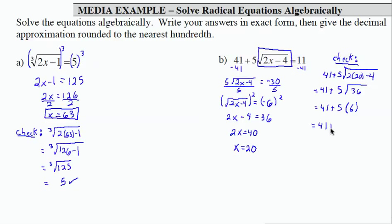I get 41 plus 5 times the square root of 36 is 6. That leaves me 41 plus 30, 71, which does not equal 20.